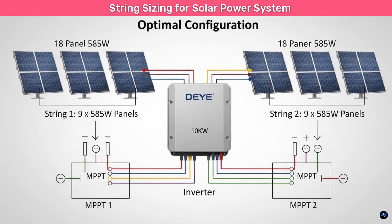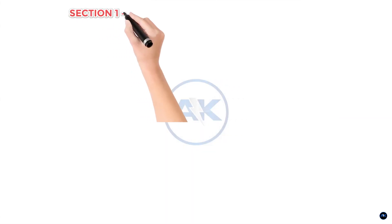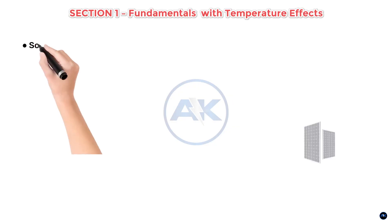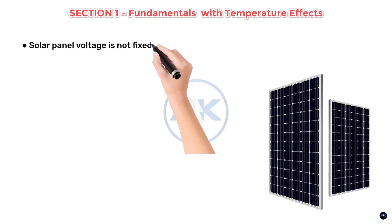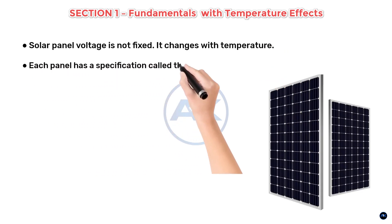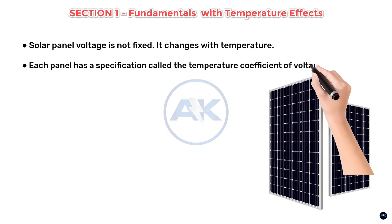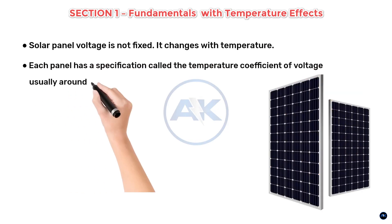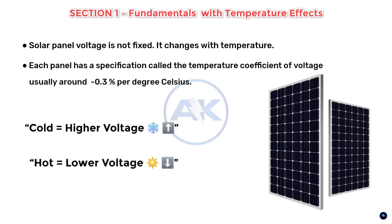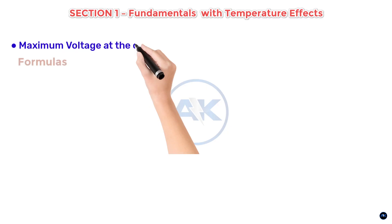Section 1 — Fundamentals with temperature effects. Here's a detail many people overlook: solar panel voltage is not fixed — it changes with temperature. Each panel has a number called the temperature coefficient of voltage, usually around minus 0.3% per degree Celsius. This means in cold weather panel voltage goes up, and in hot weather panel voltage goes down. So when we design string sizes, we must calculate both extremes.